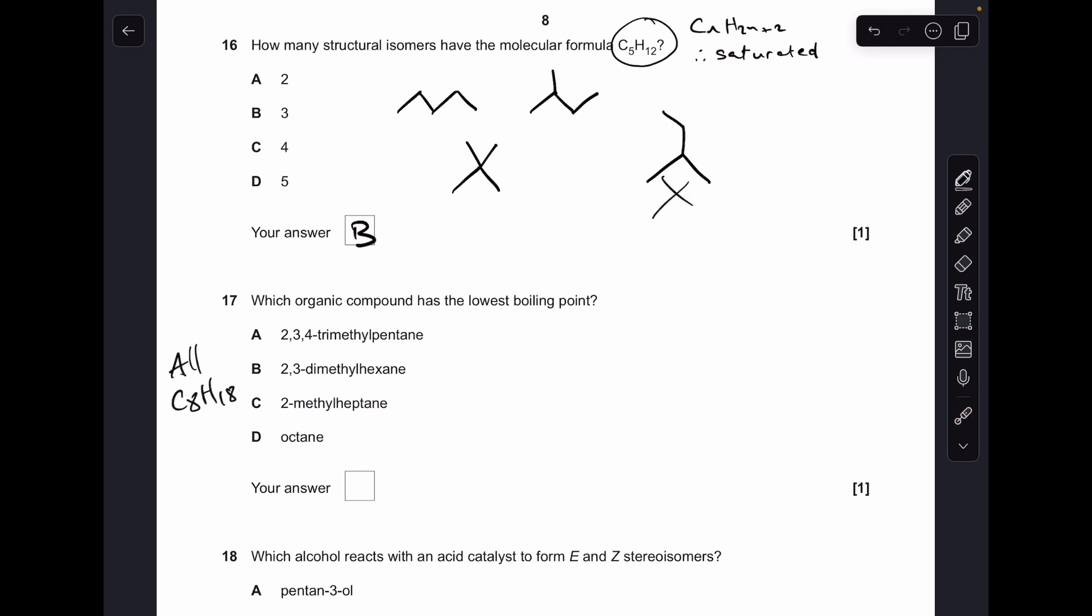Number 17, you'll notice I've written down all C8H18. They've all got the same molecular formula, so this has got nothing to do with the number of electrons influencing the London forces. It's down to branching. So the one with the most branching will have the lowest boiling point, and that is A, 2,3,4-trimethylpentane.